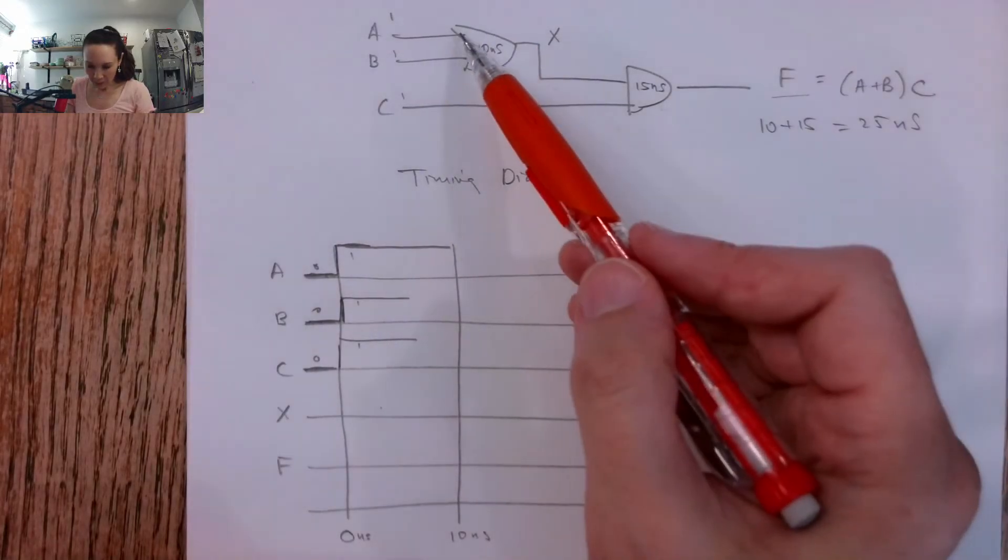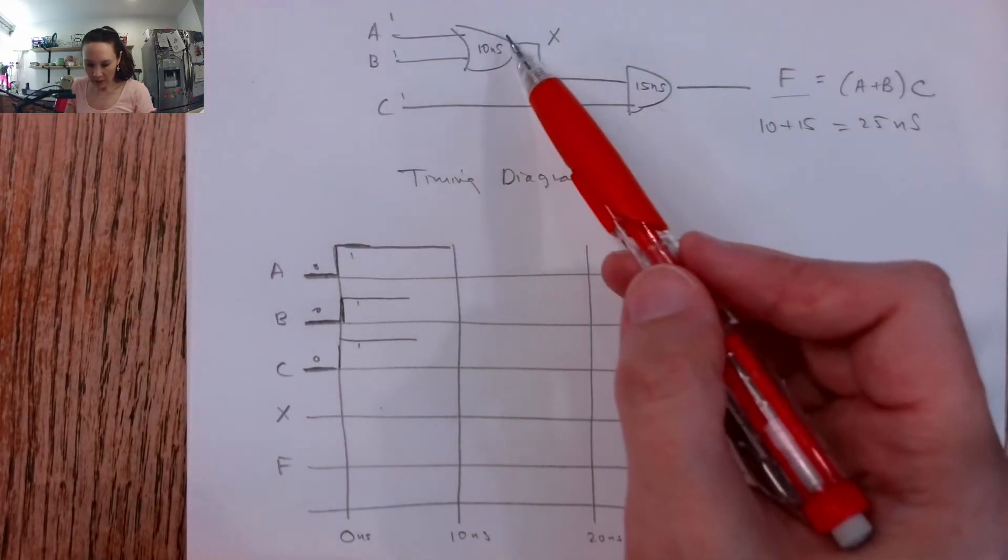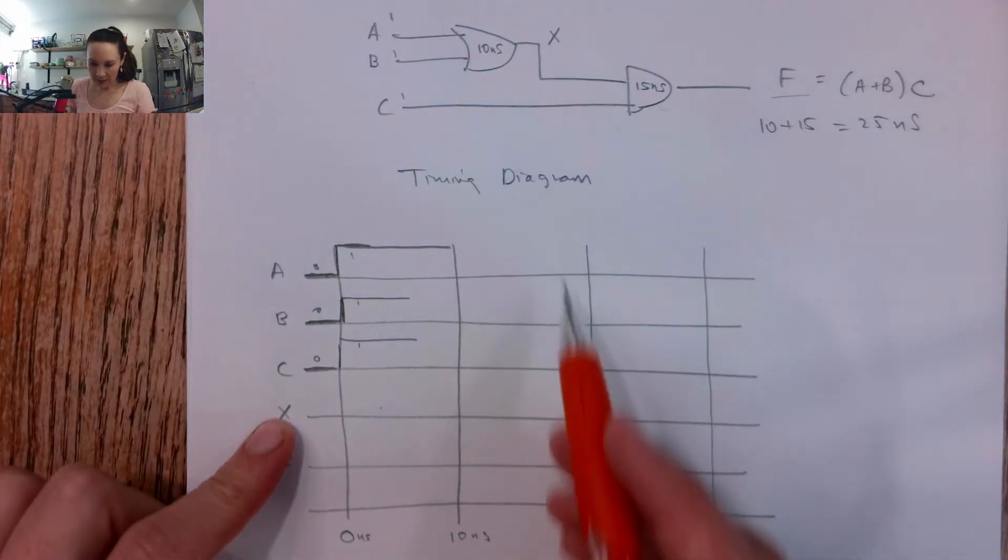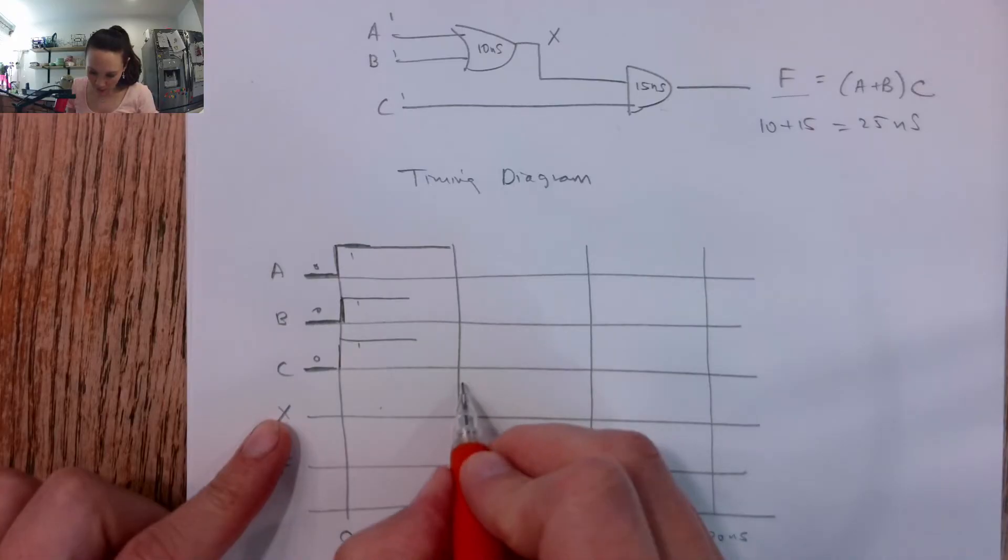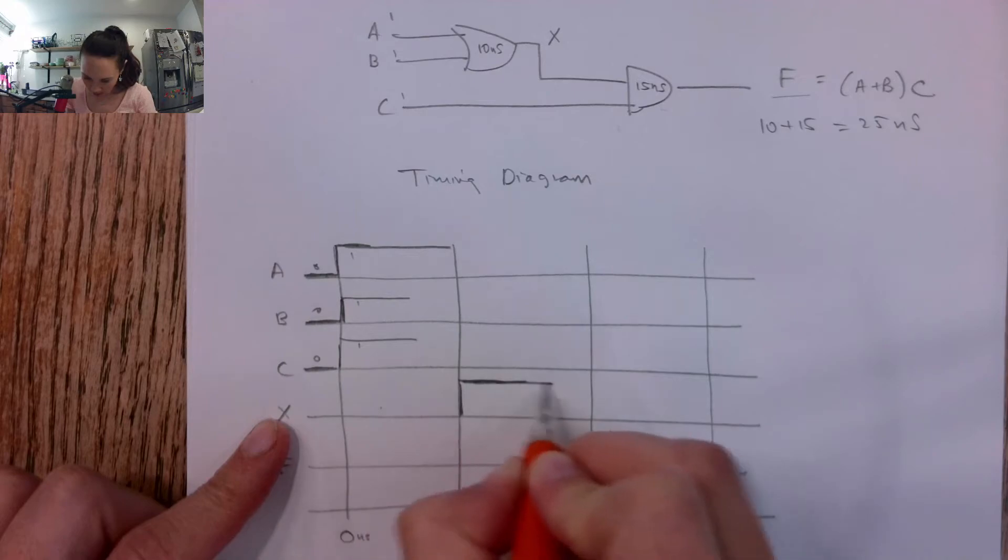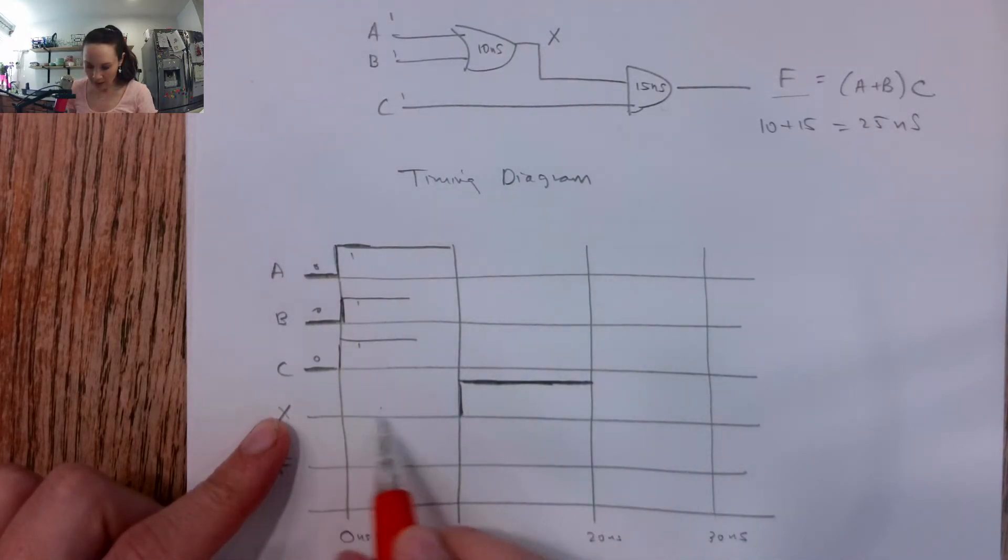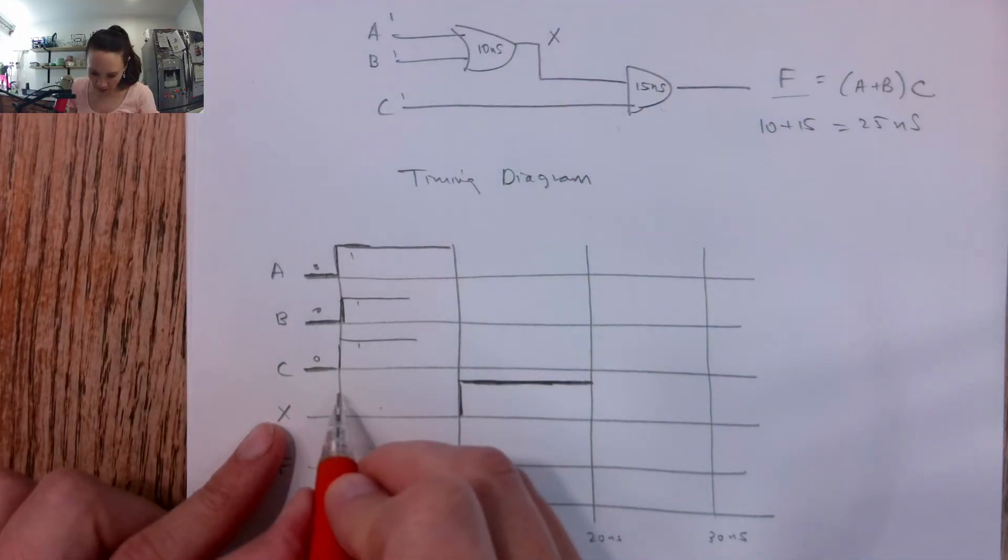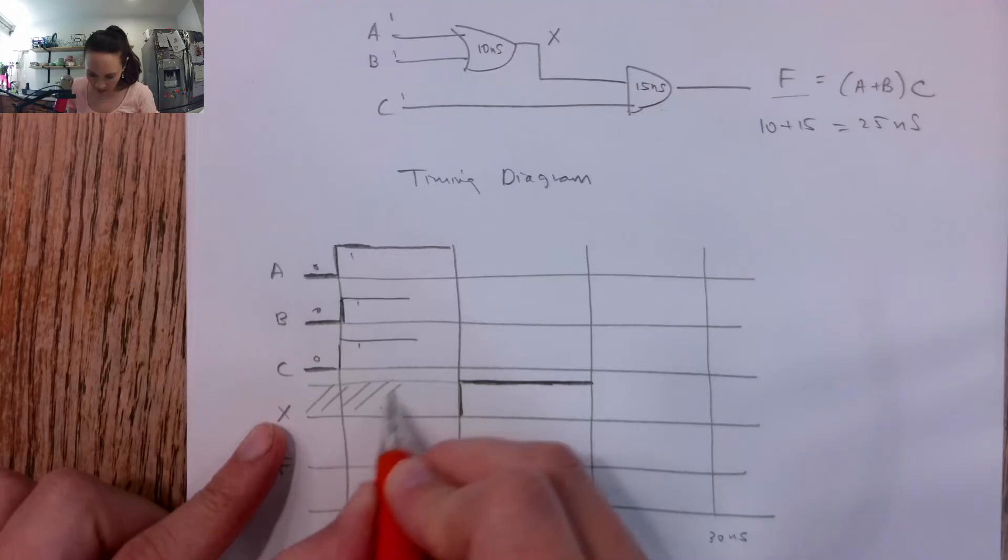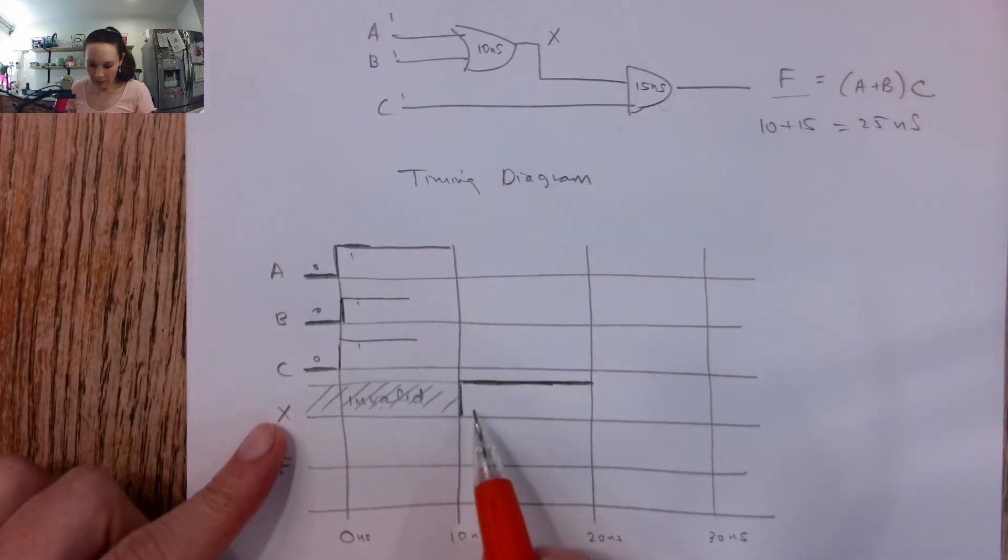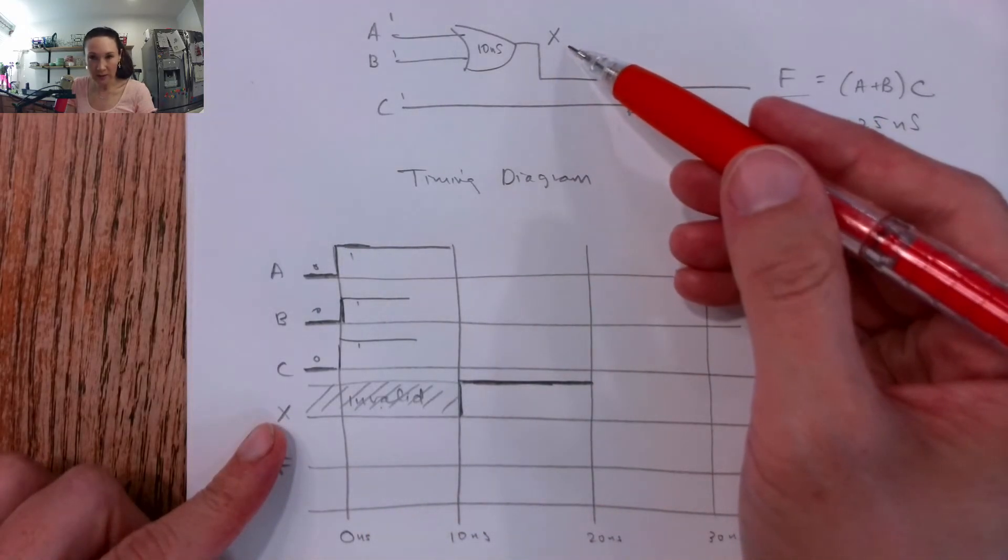We have 1 and 1 coming into this OR gate, and the result comes out on X. Since 1 OR 1 equals 1, after 10 nanoseconds we can have this result coming out on X. But the question is, what is on X before 10 nanoseconds? The answer is this is going to be invalid. So we can't trust this as a reliable output because this hasn't yet evaluated to something.